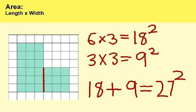Let's test it out to see if that's correct. Let's count all of these little squares to see if we have 27 in this irregular shape. Counting them up: one, two, three... all the way to 27. There you have it — 27 square units. Thank you for watching.